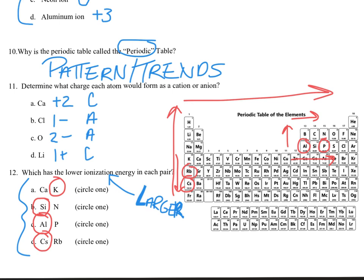That completes our periodic trends worksheet two. Hopefully this gave you the support you needed, and you're seeing how the different trends often relate to atomic radius and atomic size. Great job, science fam — keep up the good work and best of luck.